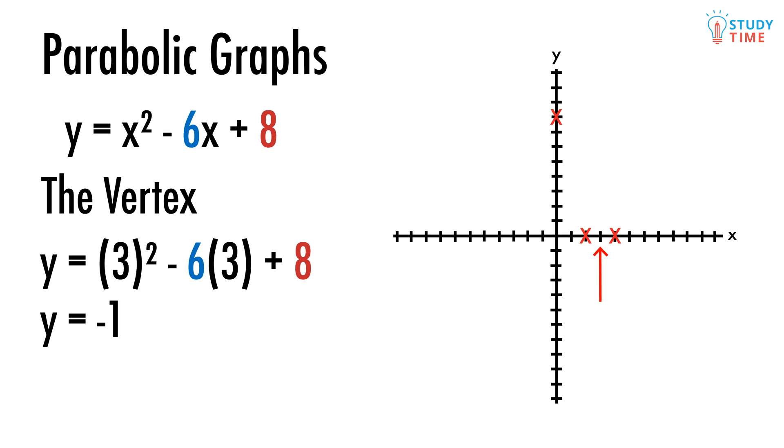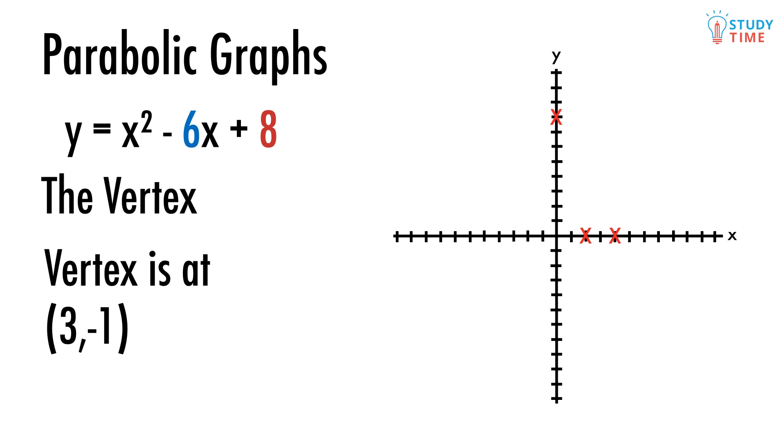If we plug x equals 3 into our equation, we get y equals negative 1. So our vertex is at 3, negative 1. Let's mark that in.